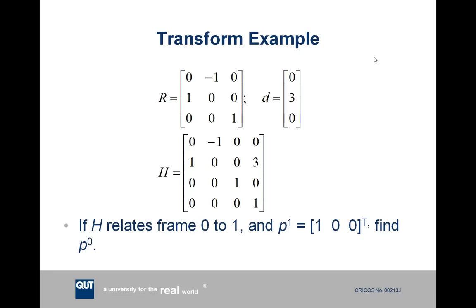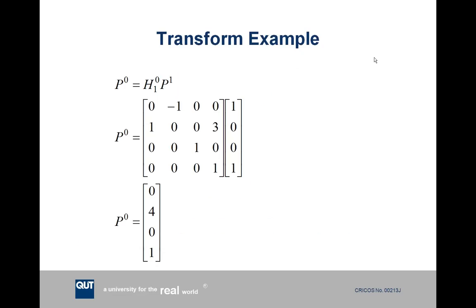We can test the homogeneous transformation relating reference frames 0 and 1 by converting a point defined in reference frame 1 into reference frame 0 coordinates. Using the standard form — the H transformation matrix times P superscript 1 — with P equal to 1, 0, 0 and a 1 appended, we do the multiplication and find that in reference frame 0, P is located at 0, 4, 0 — that is, 4 units along the Y₀ axis.